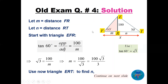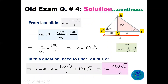Starting with triangle EFR: tan 60 equals 100 over m, since 100 is given. Tan 60 equals square root of 3, so cross-multiplying gives m equals 100 divided by square root of 3, which rationalizes to 100 square root of 3 over 3. Now for triangle ERT: tan 30 equals 100 divided by n. Tan 30 equals 1 over square root of 3, so n equals 100 square root of 3.